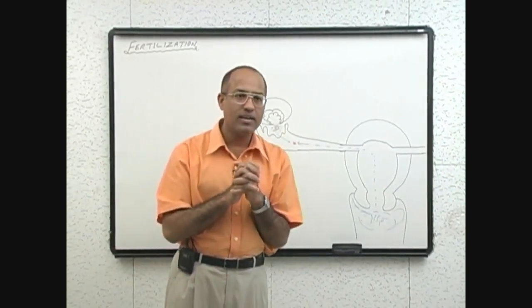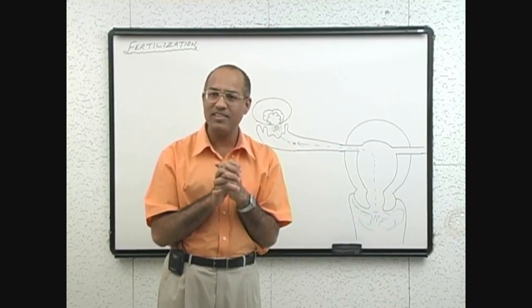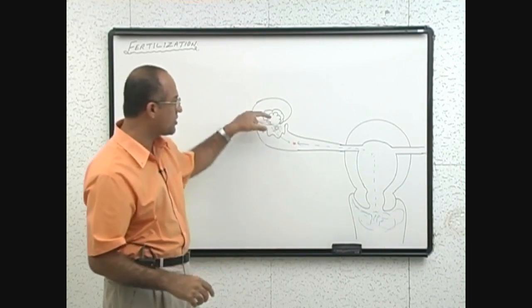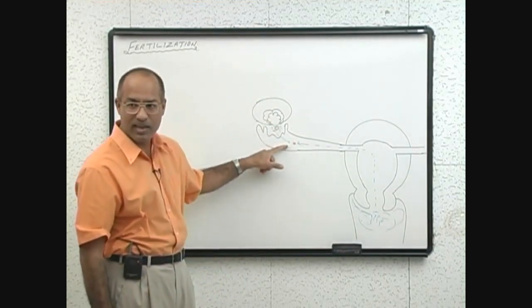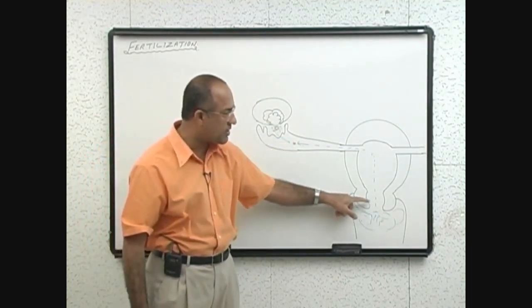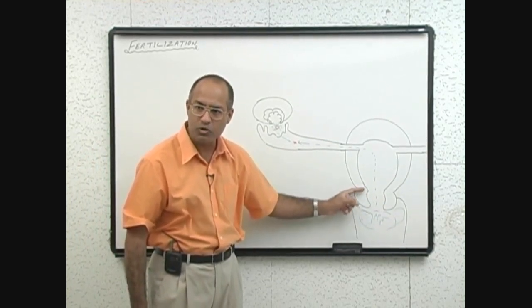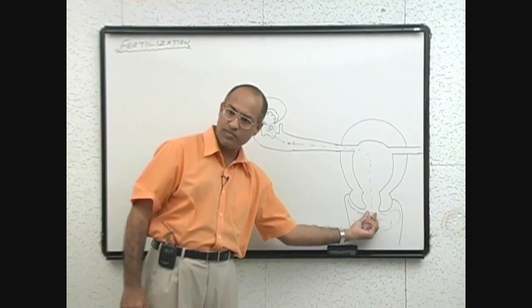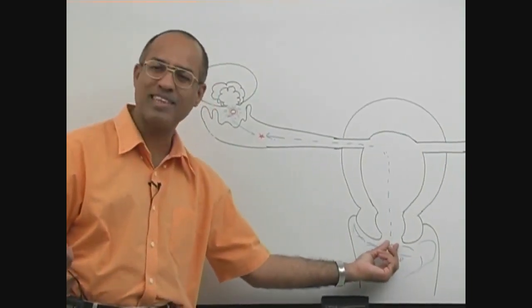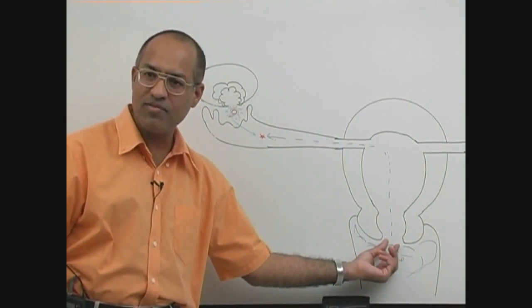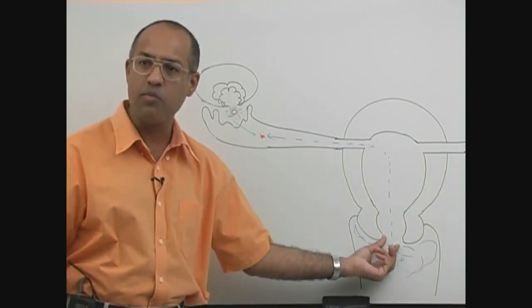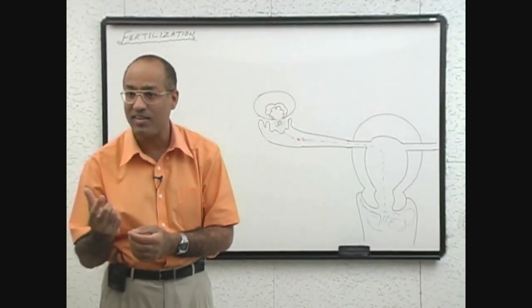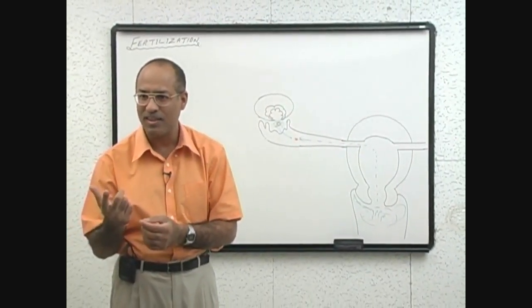Another good news is that specially around the time of ovulation, when ovum is about to be here, the glands present in cervix produce mucoid material. There is mucus in the cervix here. This mucus specially becomes thin, stringy, less viscid, and more abundant around the time of ovulation.